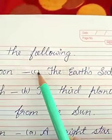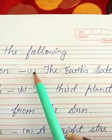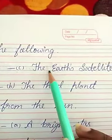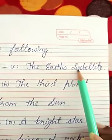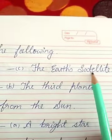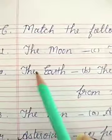Number 1 — The Moon. What is the Moon? Option C is correct. Moon is the Earth's satellite.